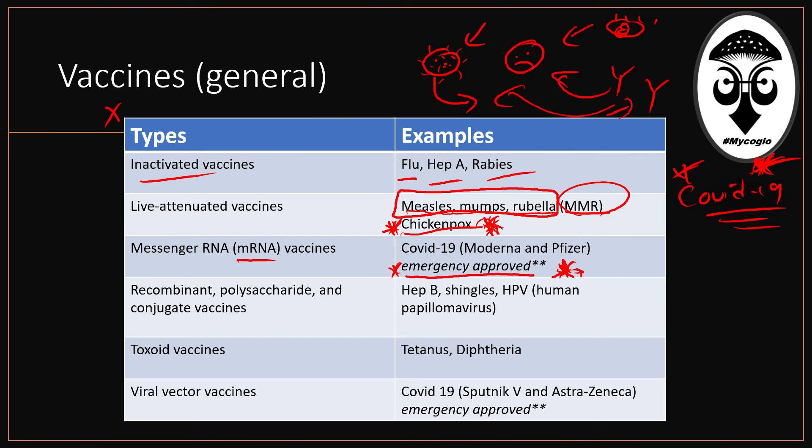It is an emergency approval because we are in the middle of the pandemic. The earlier results were fantastic — more than 90% effective in producing the immune response needed. But we probably lack a lot of research and data regarding any secondary illness or side effects. These mRNA vaccines are actually very simple vaccines.